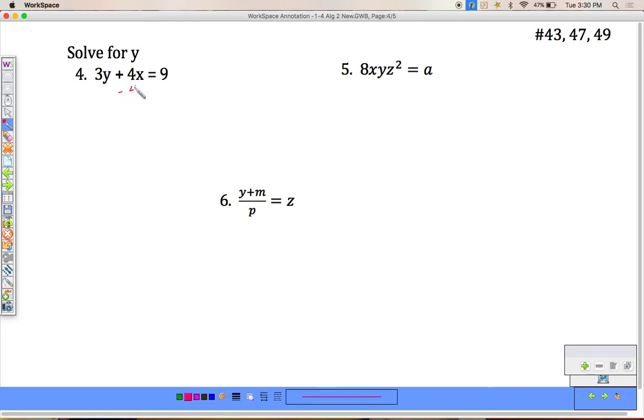We get 9 minus 4x. We could also have negative 4x plus 9. Both are good. Divide by 3. We have two ways. We can do it as a whole. This is an acceptable answer. Not the best looking answer, but acceptable.